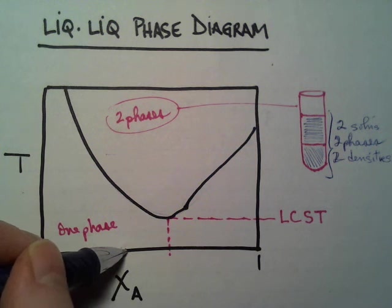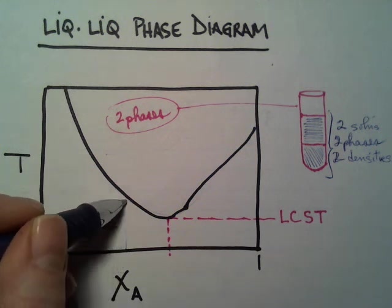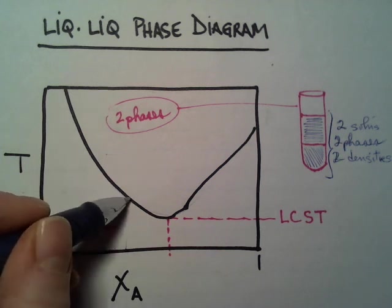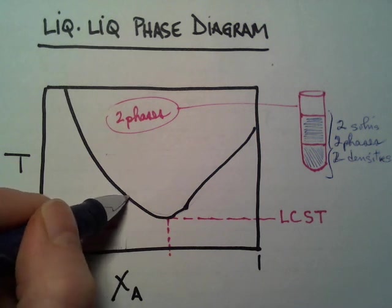I would actually have, at the lower temperature, a single phase, and then as I heat, it would phase separate at this critical temperature that's associated with this composition.